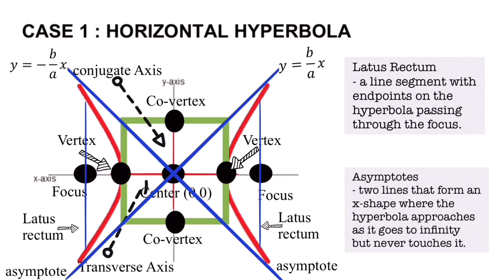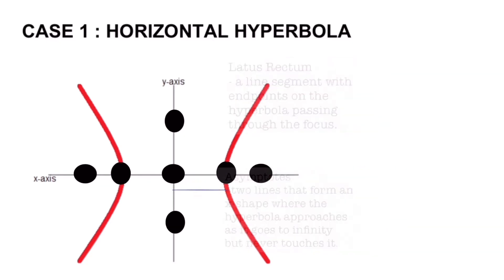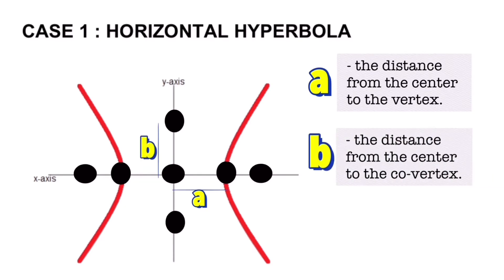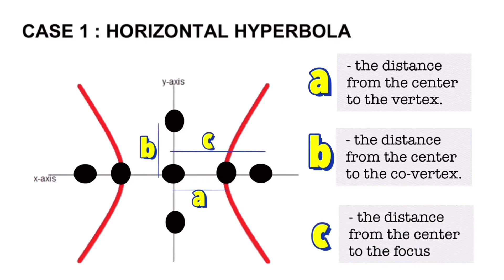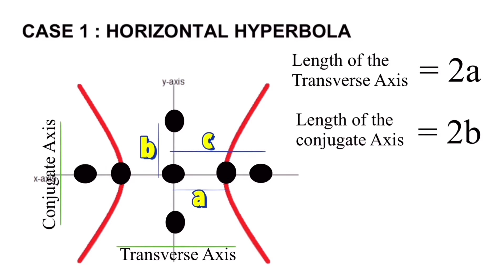Now let's look at some important lengths of a hyperbola. The distance from the center to the vertex is represented as letter a. The distance from the center to the co-vertex is represented as letter b, while the distance from the center to the focus is represented as letter c. The length of the transverse axis, from one vertex to the other, is 2a, while the length of the conjugate axis, from one co-vertex to the other, is 2b.